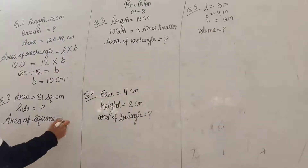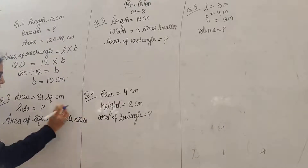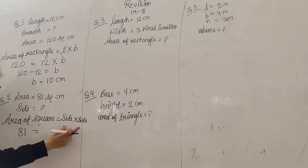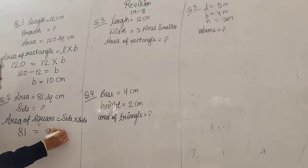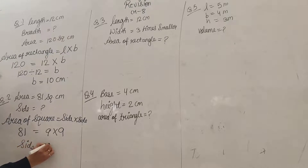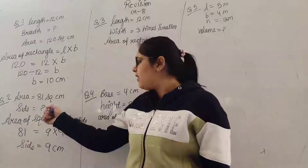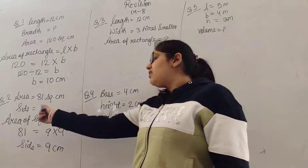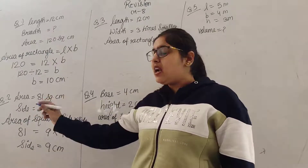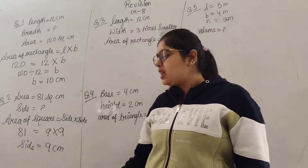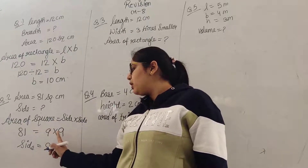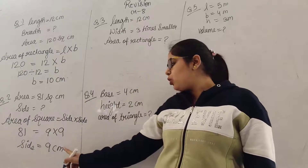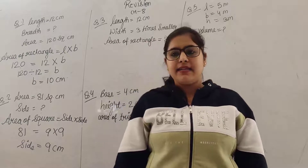Area of square is side into side. If we have area 81 cm², then we need to find two numbers that multiply to give 81. Which number multiplied by itself gives 81? 9 into 9. So automatically my side is 9 cm.